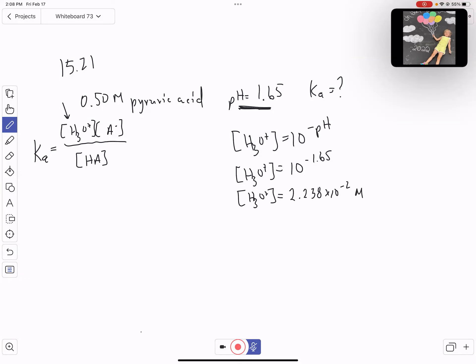That concentration is also the concentration of the conjugate base because for every pyruvic acid that ionizes, we get one pyruvate conjugate base and one hydronium. Now we can find Ka. Ka equals 2.238 times 10 to the minus 2 times 2.238 times 10 to the minus 2 all over our initial concentration 0.5.